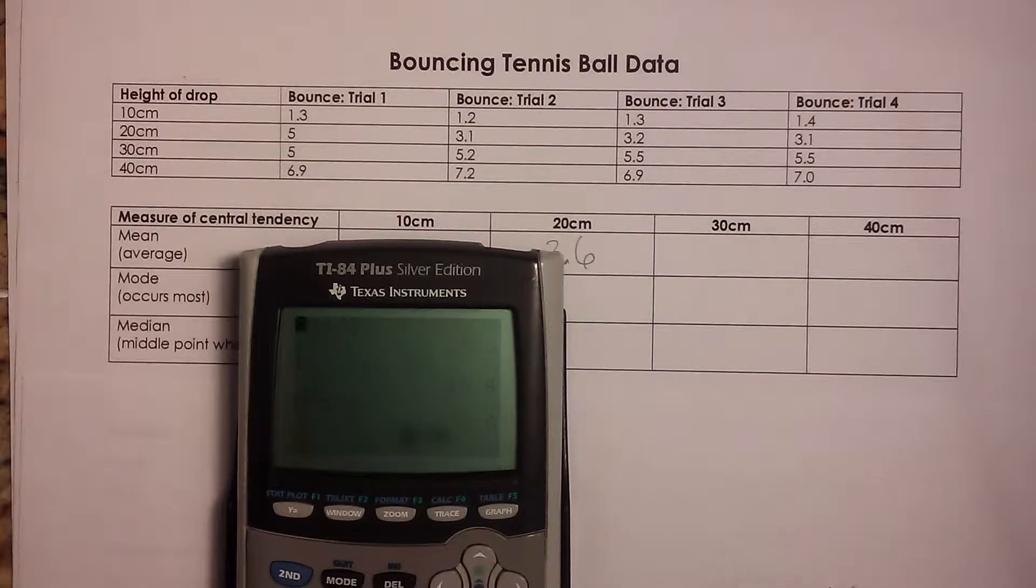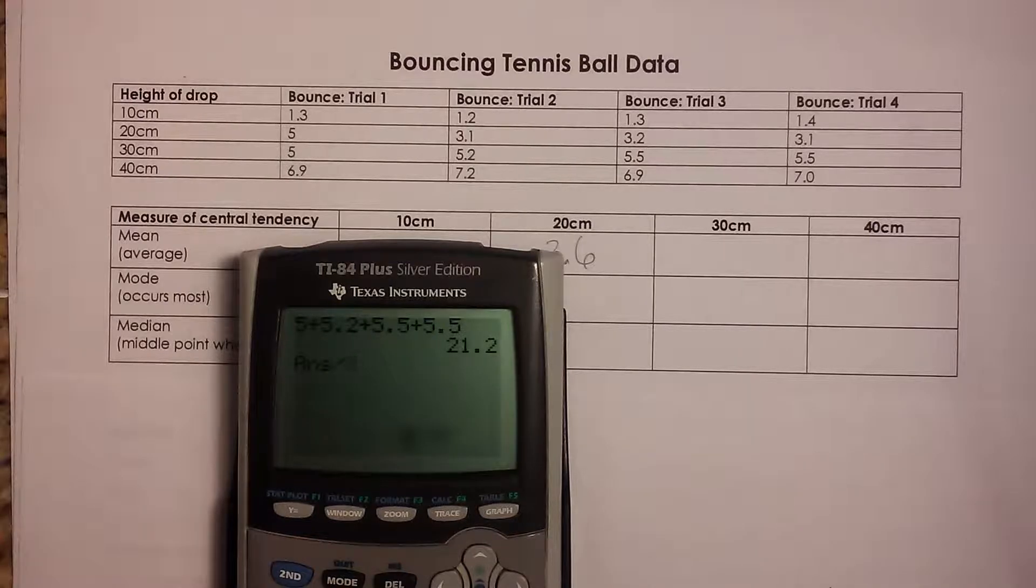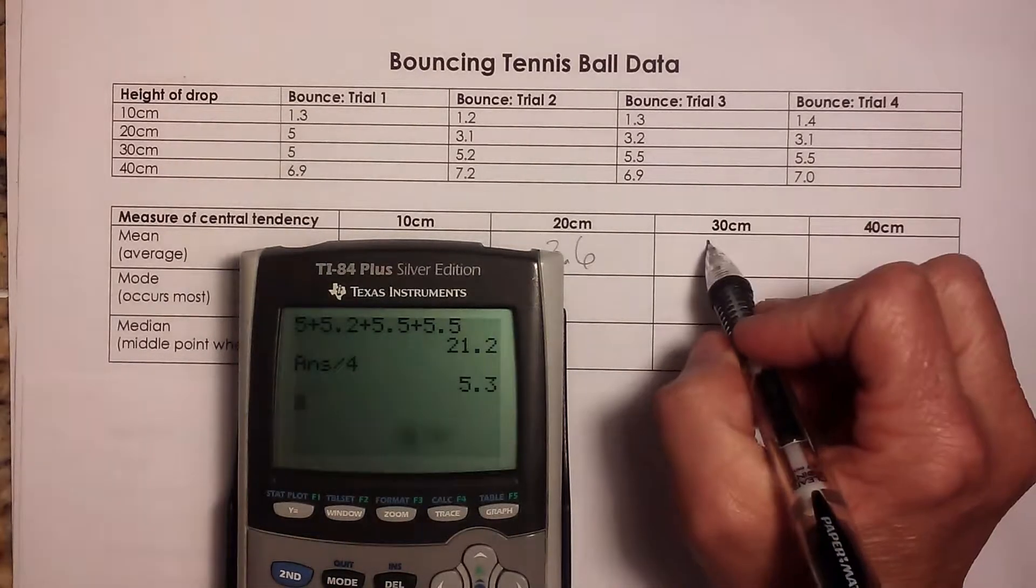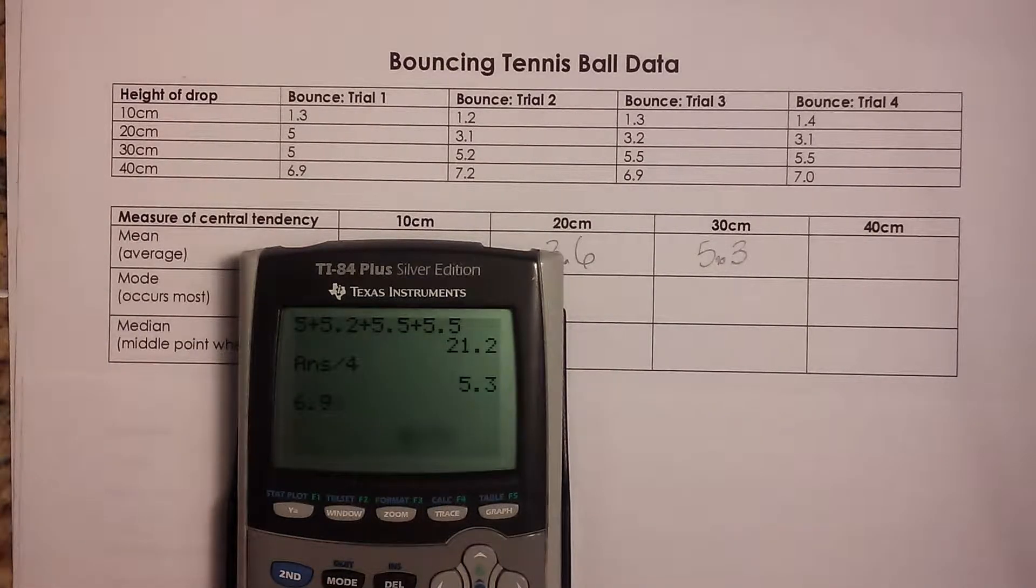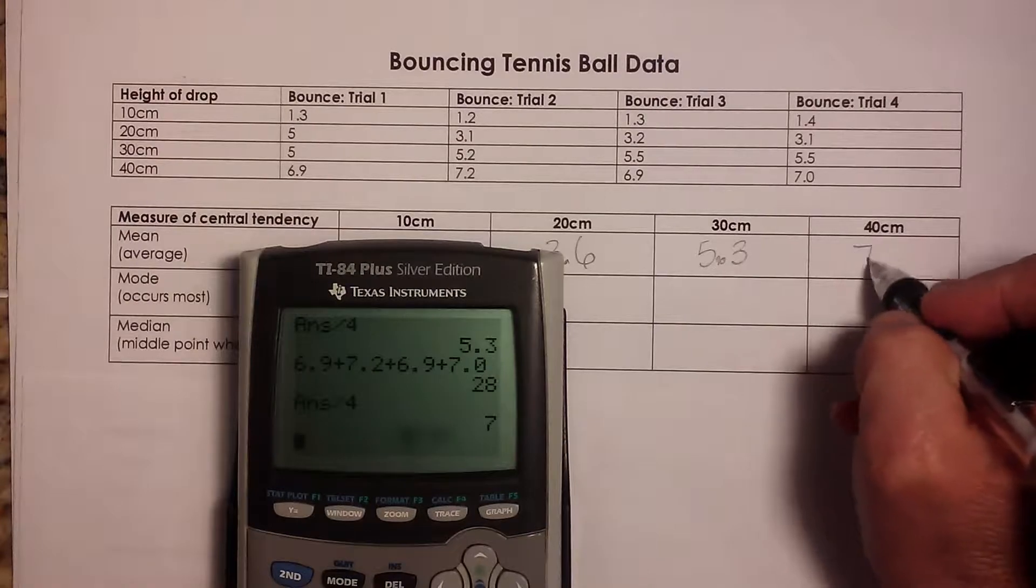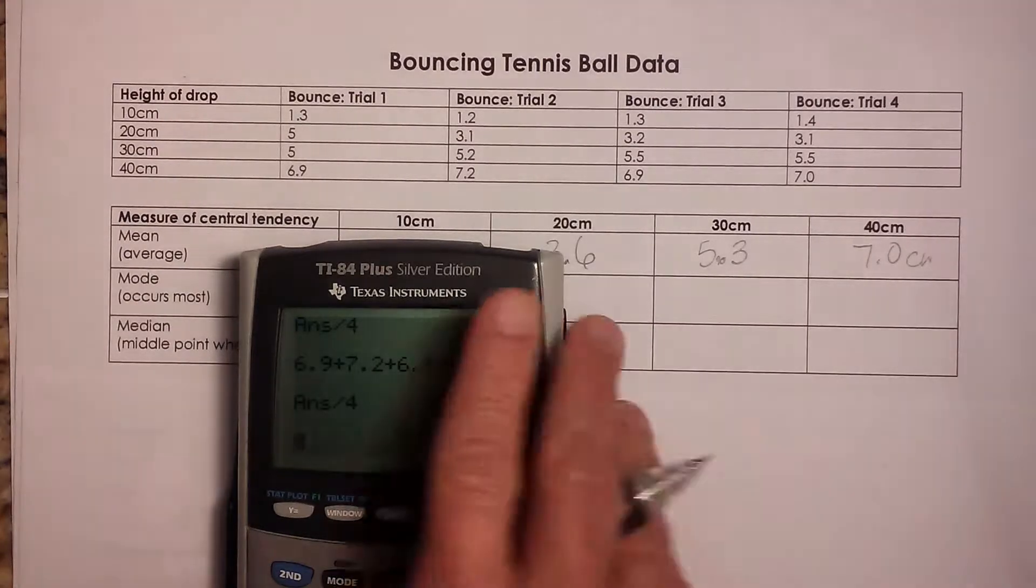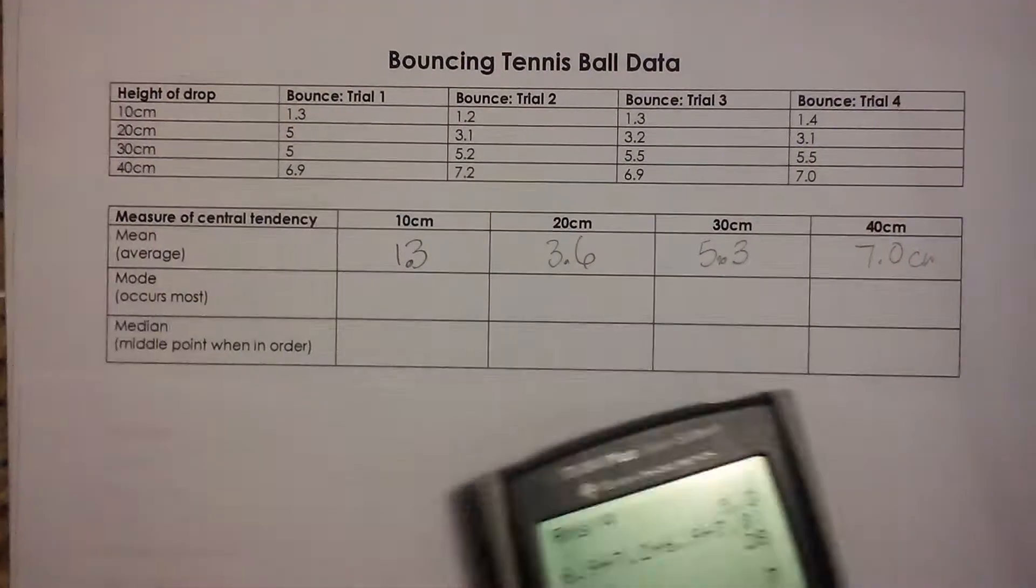So let's look at the next one and that will have an effect on our data. We have 5, 5.2, 5.5, and a second 5.5 to get the height from 30. And that's 5.3 is my average. And the last one is 6.9, 7.2, another 6.9, and then 7.0, all divided by four. And that comes out to seven centimeters even. So there we go. Now we've got the average for each of the trials.